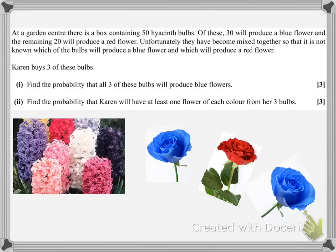This means we can look at the probabilities of getting various combinations of flowers. So Karen buys three of these bulbs and the two things we'll be interested in are the probability that all three produce blue flowers and then the probability that she can get at least one flower of each colour. So she'd have at least one blue, at least one red, and then the other one could be either red or blue.